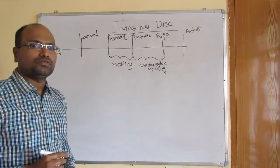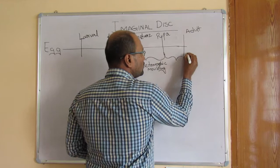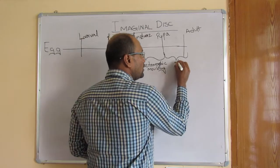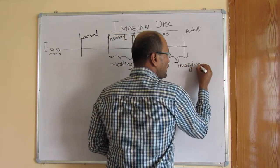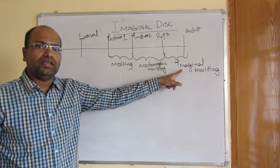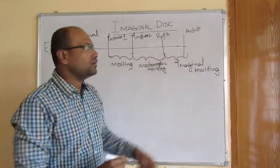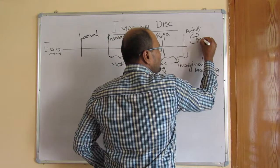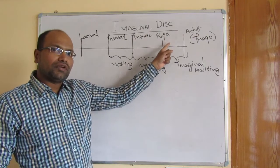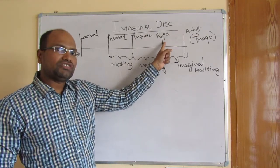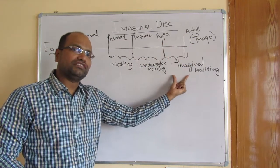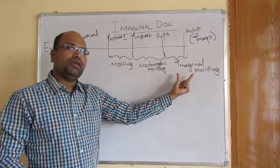The molting that takes the pupal stage to the adult structure is called imaginal molting. It is called imaginal molting because the adult is also known as imago. So the larval stage converts to the pupal stage and then to the adult stage — the adult stage is called imago — and that molting which assists in this transformation is called imaginal molting.